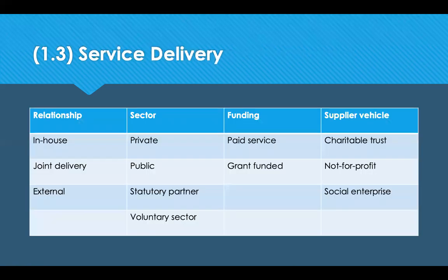Service delivery in the public sector is driven by four aspects: the relationship (in-house, joint delivery between private and public sector, or completely external), the sector (public, private, statutory partners like the NHS, or voluntary sector), the funding (paid for or grant funded — for example Meals on Wheels, where the receiver pays), and the supply vehicle (charities, other not-for-profits or social enterprises).